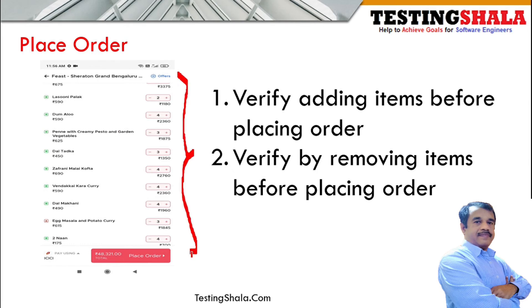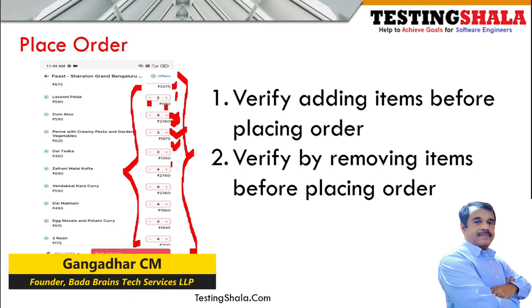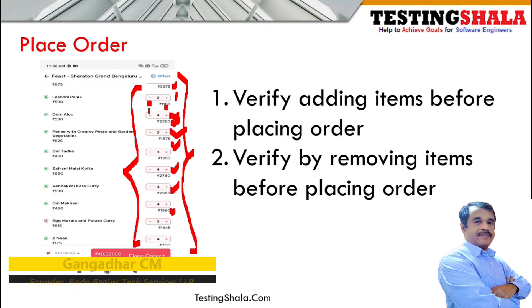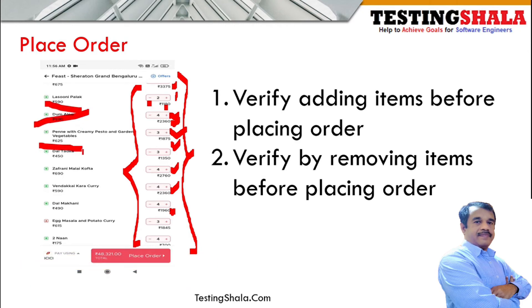When we select a payment method, we should be able to place the order. In the order summary, all selected items will be listed. We can further increase or decrease item quantities, and the bill amount should increase or reduce accordingly. If an item quantity is set to zero, it should be removed. The overall bill amount should reflect all changes appropriately.